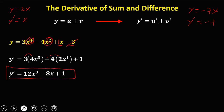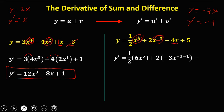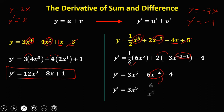For the next example, we have 1 half times the derivative of x to the power 6: the coefficient is 6, minus 1 for the exponent, giving 6x to the power 5. Plus 2 times the derivative of x to the power negative 3: using the power rule, that's negative 3x to the power negative 4. The derivative of 4x is 4, and the constant term is 0. Simplifying: 1 half times 6 gives 3x to the power 5, and 2 times negative 3 gives negative 6x to the power negative 4, so y prime equals 3x to the power 5 minus 6 over x to the power 4 minus 4.